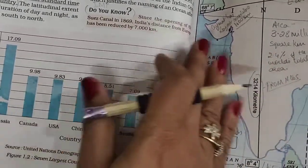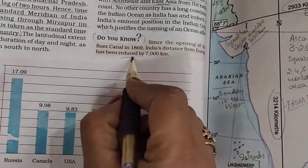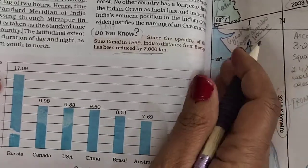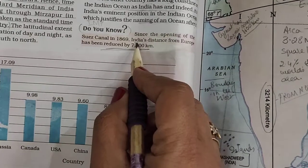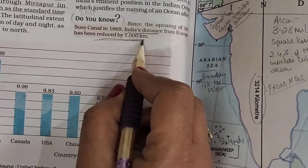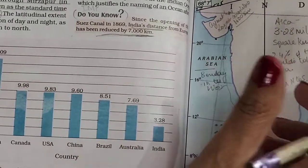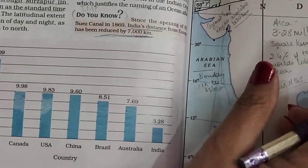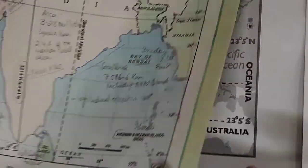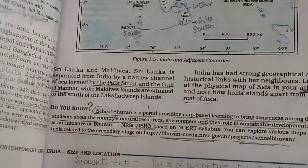Another very important 'Do You Know': the Suez Canal. It is a man-made waterway located in Egypt, made with the intention of reducing distance. It has reduced India's distance from Europe by around 7,000 kilometers. It connects two very important water bodies — the Mediterranean Sea and the Red Sea.